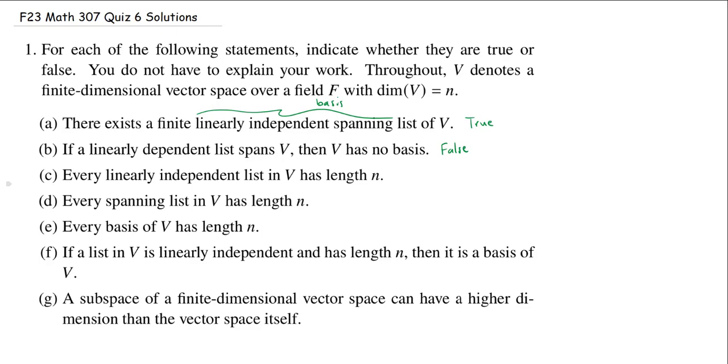Third one: every linearly independent list in V has length N. Well, of course, you could just take the empty list, and that has length zero. And if N is not equal to zero, then this isn't going to work. It's very easy to have linearly independent lists. In fact, as soon as we find a basis, if you remove any of the vectors in the basis, you'll again get a linearly independent list. So they're not all going to have the same length. This statement is false.